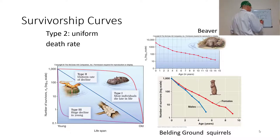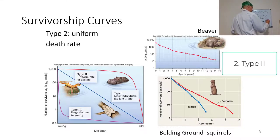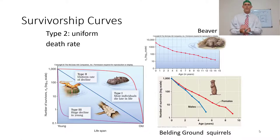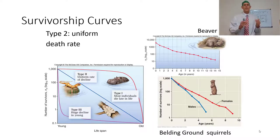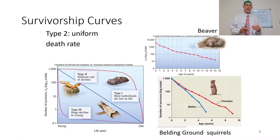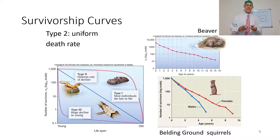Type 2 is a relatively uniform death rate. Passerine birds tend to die at a steady rate — about half of them die every year. Beavers and Belding's ground squirrels also have a relatively uniform death rate. Basically, every single year is just as risky as every other year — there isn't an age-specific high-risk time. With Type 2, it's always the same amount of risk to be alive.